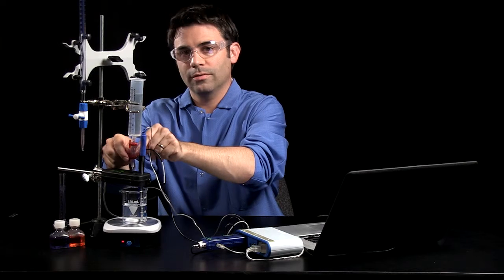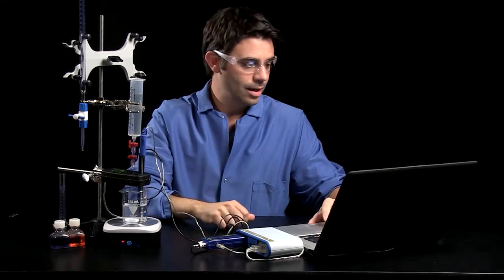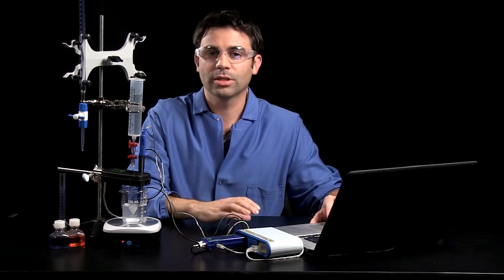Okay. I'm going to turn off the drop dispenser. And I'll stop data collection. Now we have a textbook example of a pH titration curve of a strong base with a strong acid. But we can go further with that.